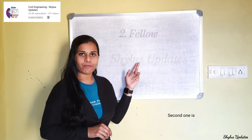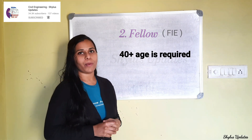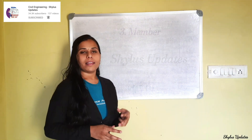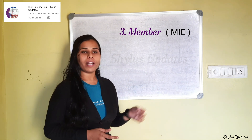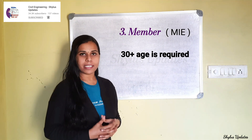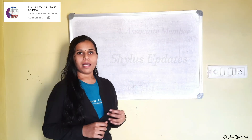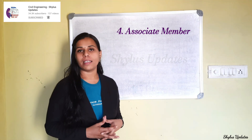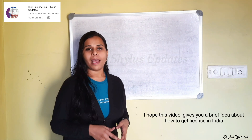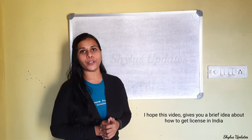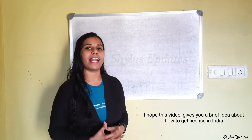Fellow F.I.E. requires 40 plus years of age. Member M.I.E. requires 30 plus years of age. Associate Member requires 21 plus years of age. I hope this video gives you a brief idea about how to get a license in India.